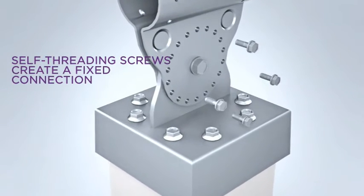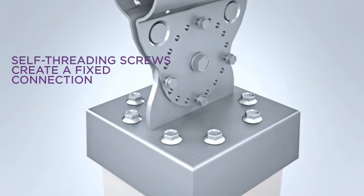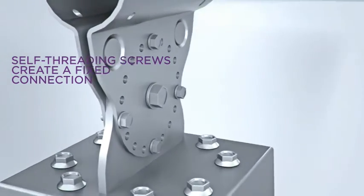After adjustment is completed, self-threading screws are inserted into the pre-aligned holes in the Roto-Lock, creating a fixed connection.